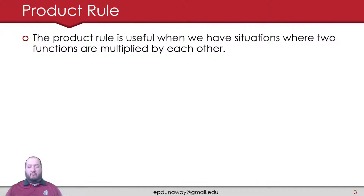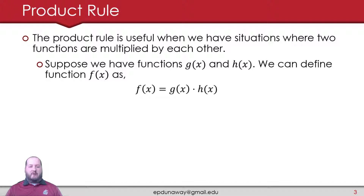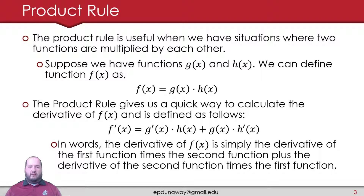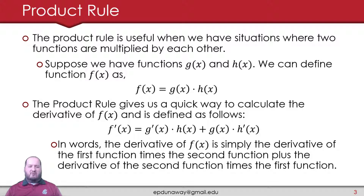Let's talk about the product rule. It's useful in situations where we have two functions multiplied by each other. If we have two functions of x — g of x and h of x — we can define f of x as g of x times h of x. The product rule gives a quick way to calculate the derivative: f prime of x equals g prime of x times h of x, plus g of x times h prime of x. In words, it's the derivative of the first function times the second, plus the derivative of the second times the first. You just keep adding them together — that's all there is to the product rule.